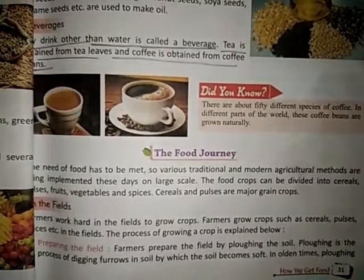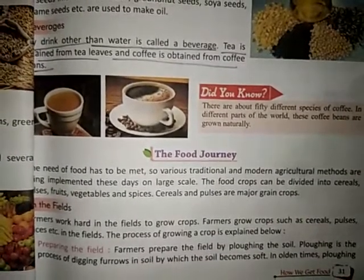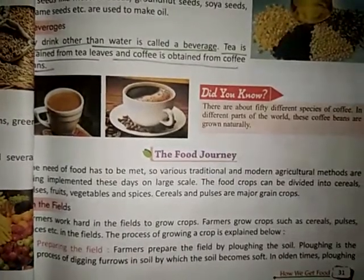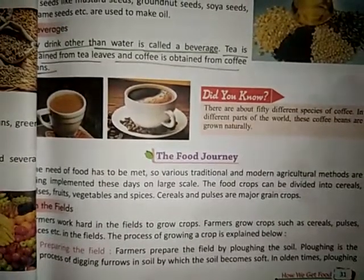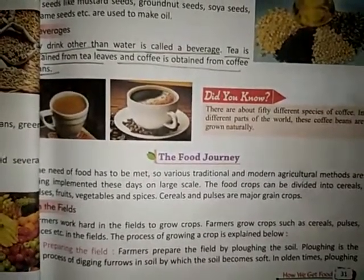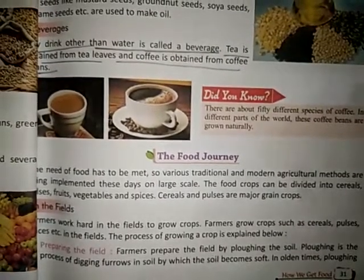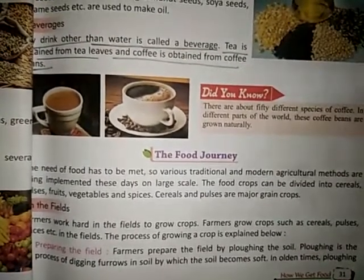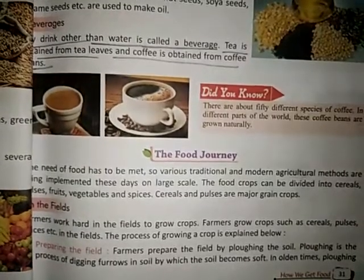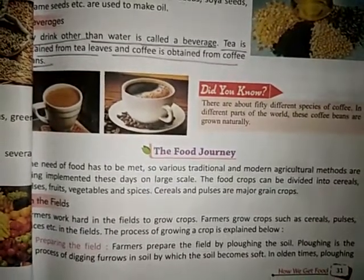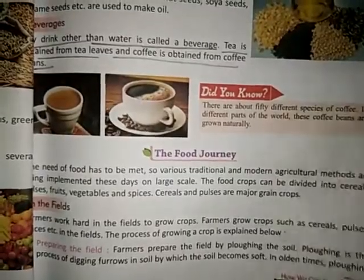First, preparing the field. Farmers prepare the field by ploughing. Ploughing is the process of digging furrows in soil by which the soil becomes soft. In olden times, ploughing was done with the help of oxen. But these days, farmers use tractors to plough their fields.